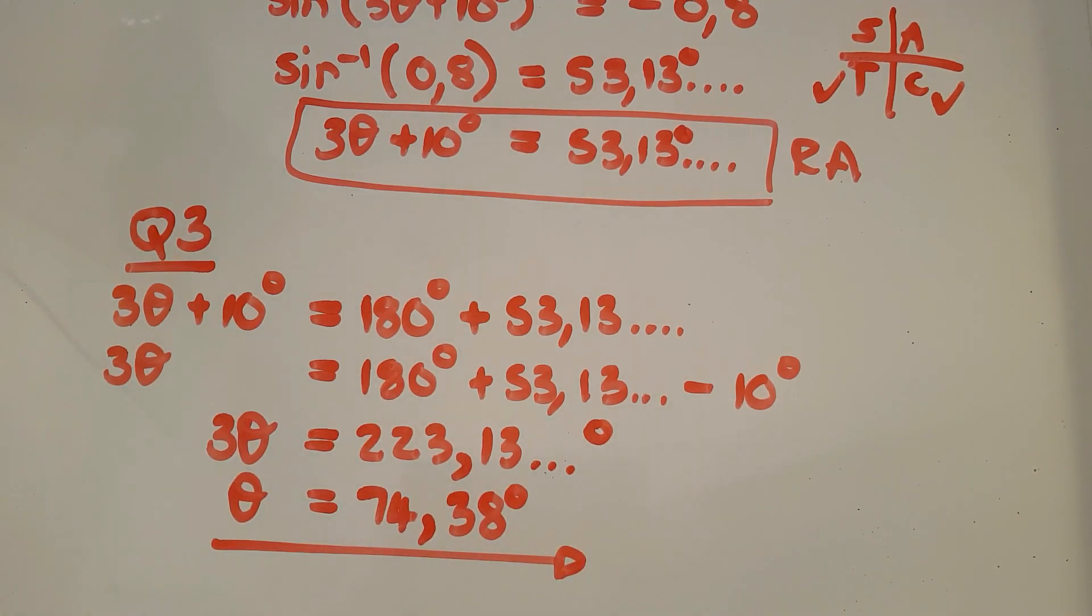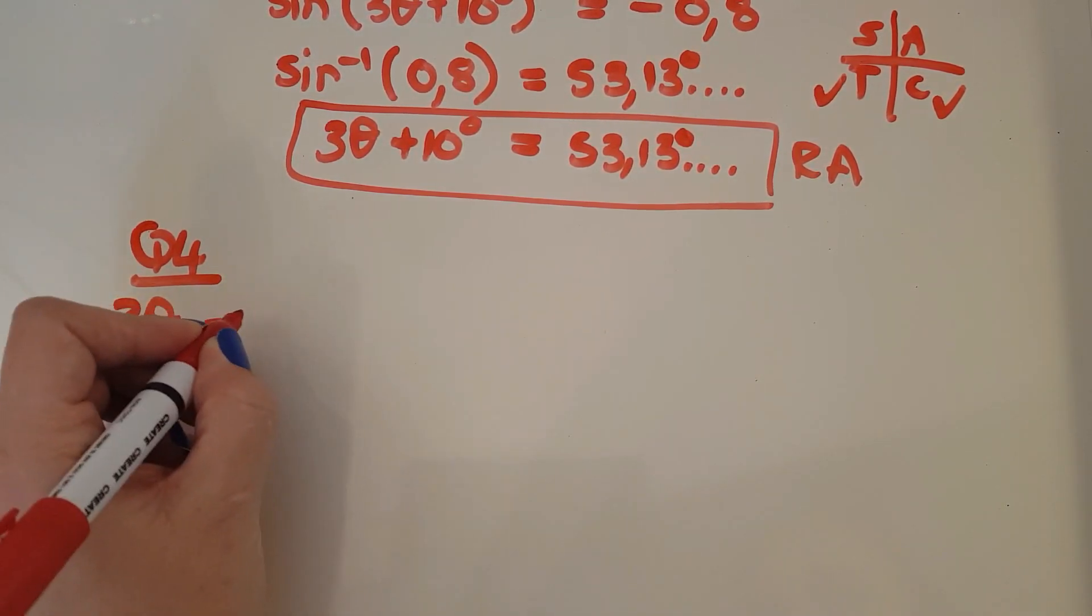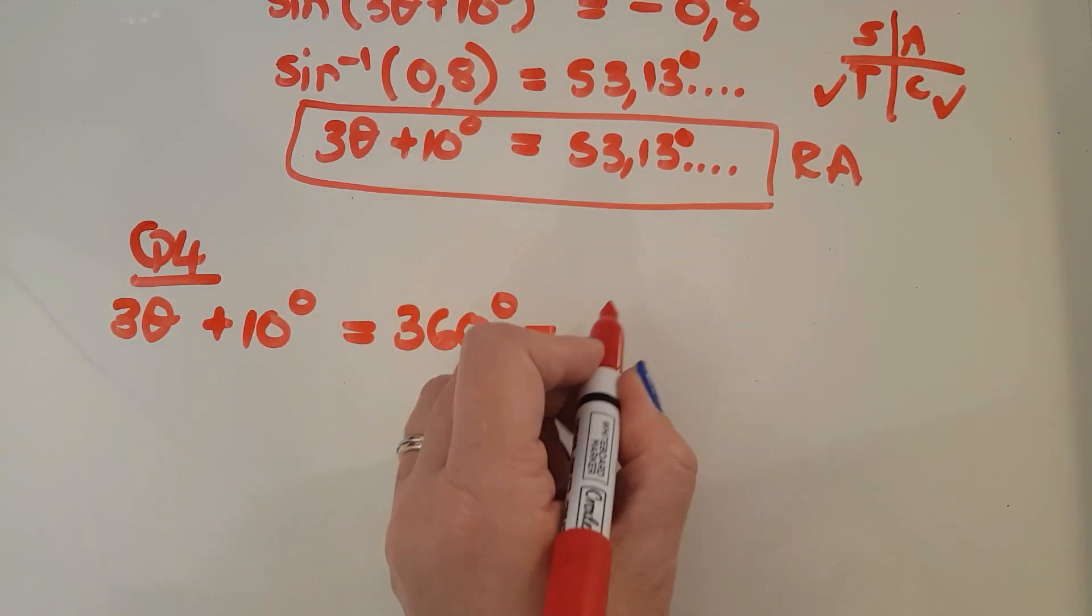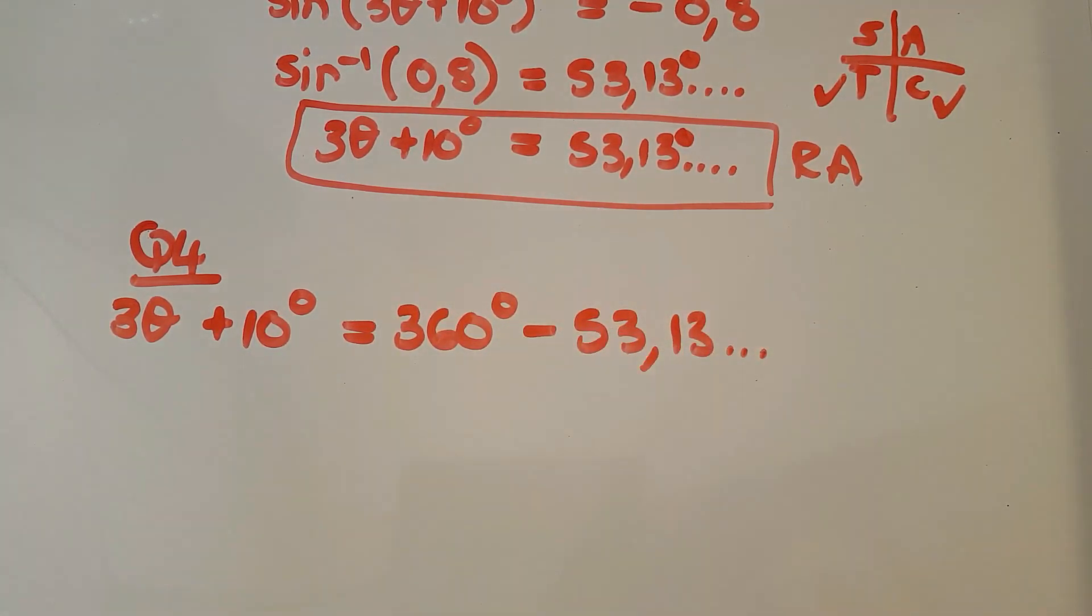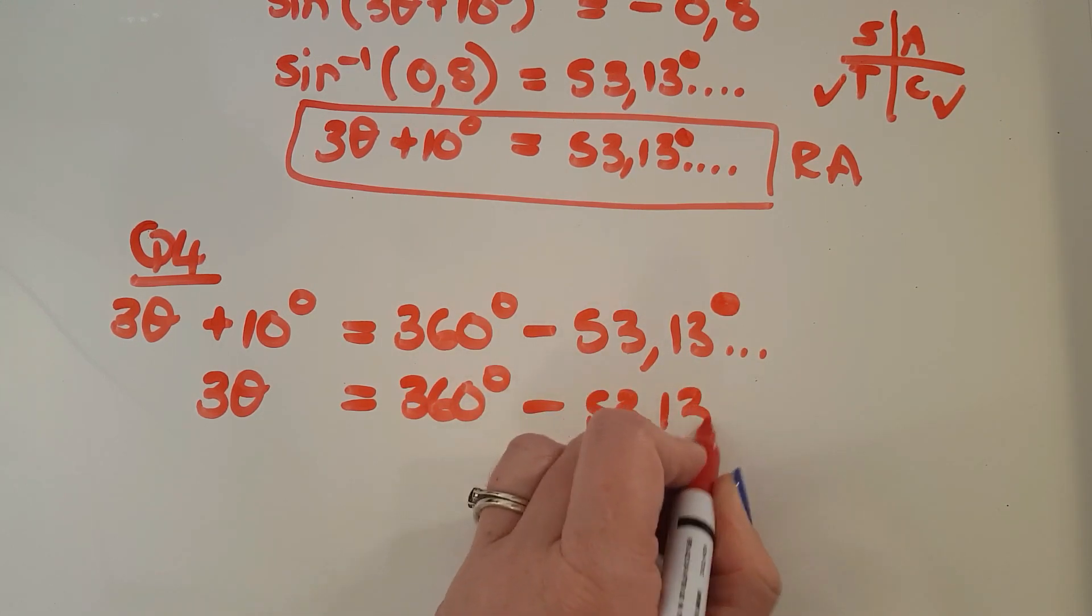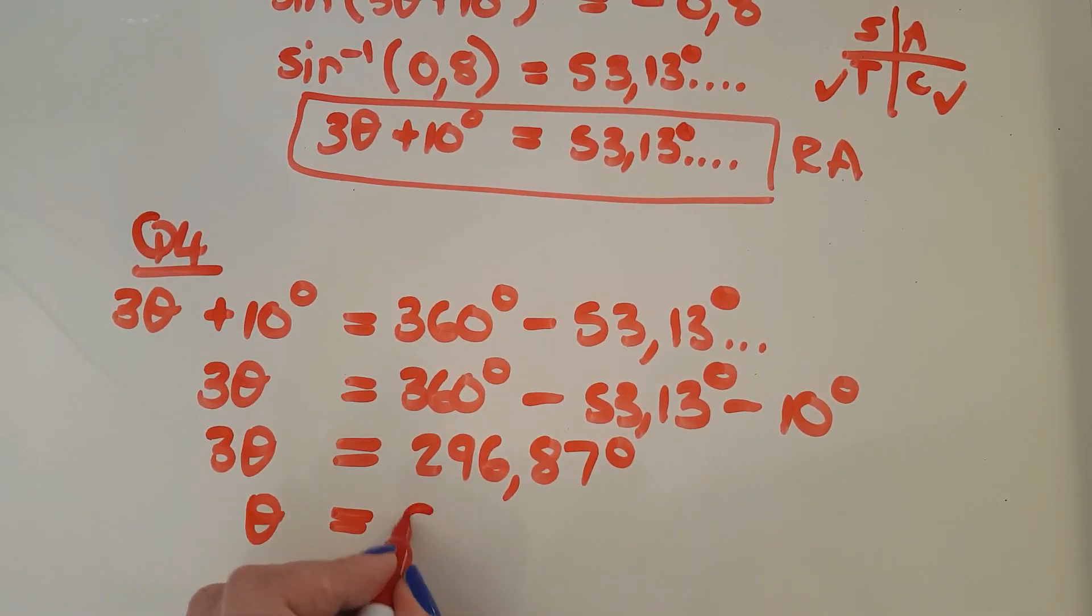Now let's go to quad 4. In quad 4, it's the 360 minus quad. So I've got 3 theta plus 10 degrees and that will give me 360 minus my reference angle. So the same procedure again. I'm going to minus the 10 on that side. And that gives me the 296.87. And then when I divide that by 3, I get out 98.96 degrees.